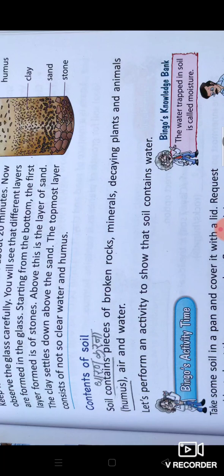Contents of soil. Soil contains pieces of broken rocks, minerals, decaying plants and animals, humus, air, and water.